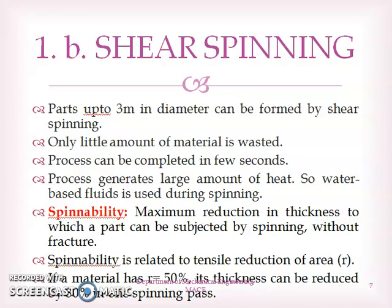Another parameter considered during spinning is spinnability. Spinnability is the maximum reduction in thickness to which a part can be subjected by spinning without fracture. Spinnability is related to tensile reduction of area, denoted as R. If a material has R of 50%, its thickness can be reduced by 80% in one spinning pass.